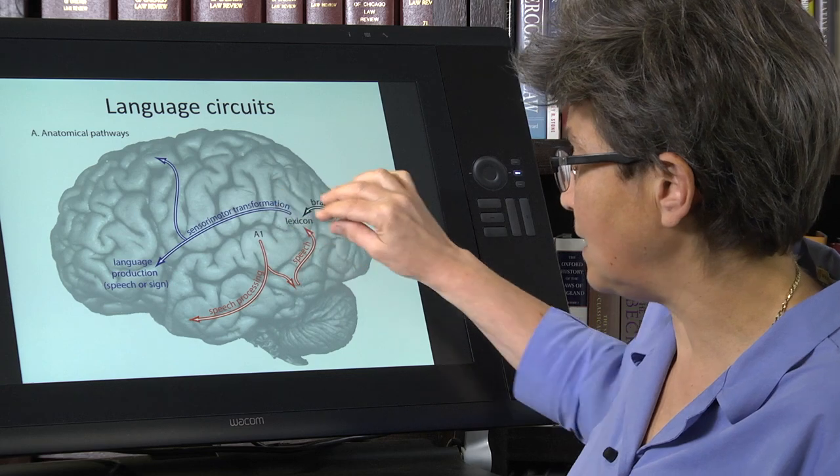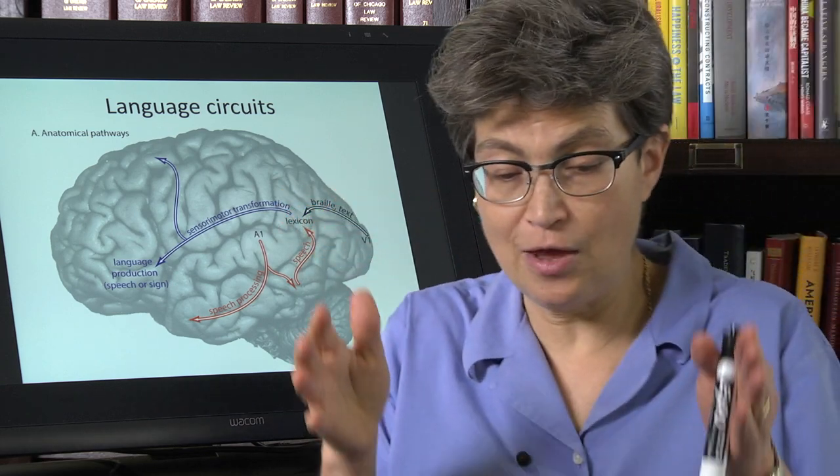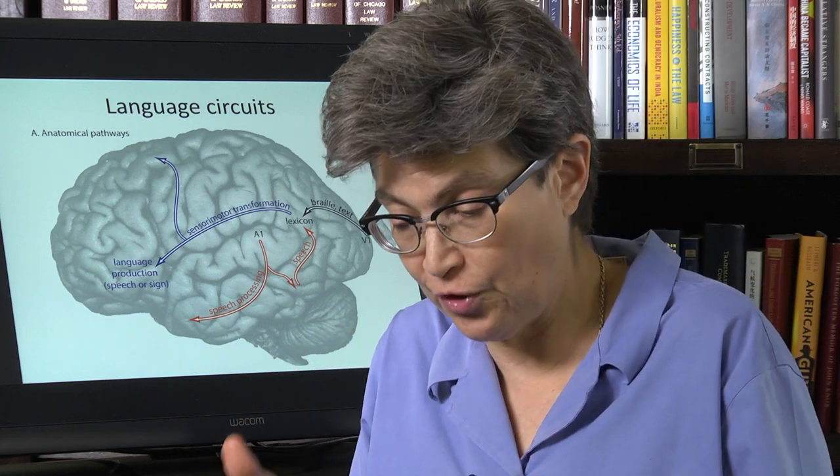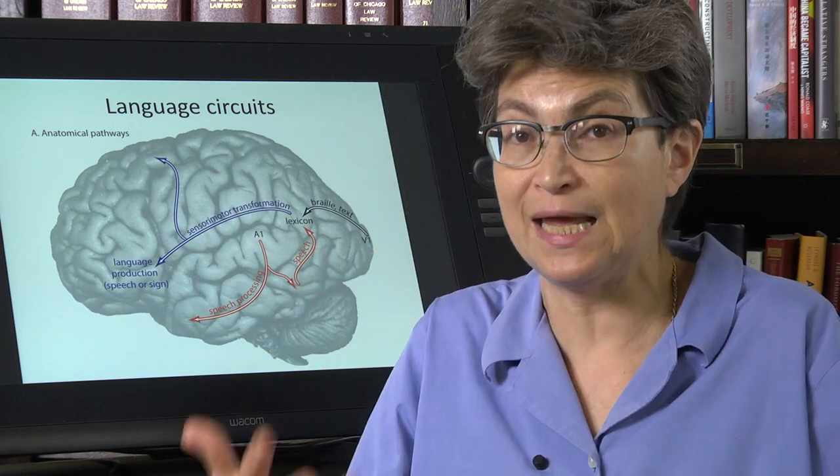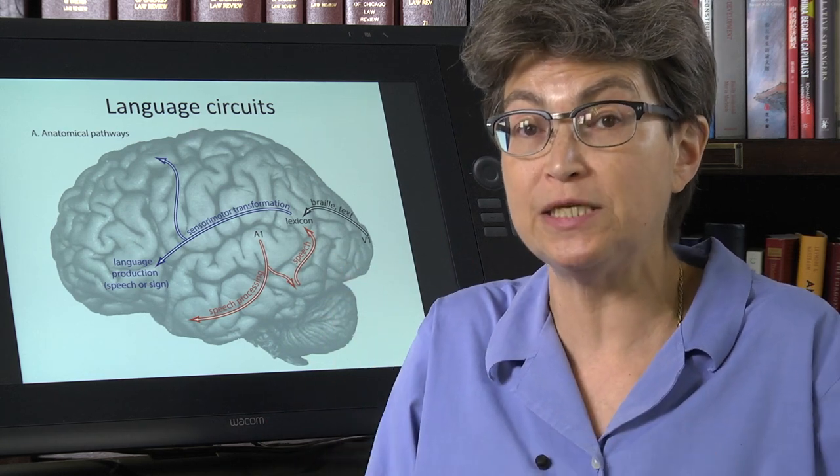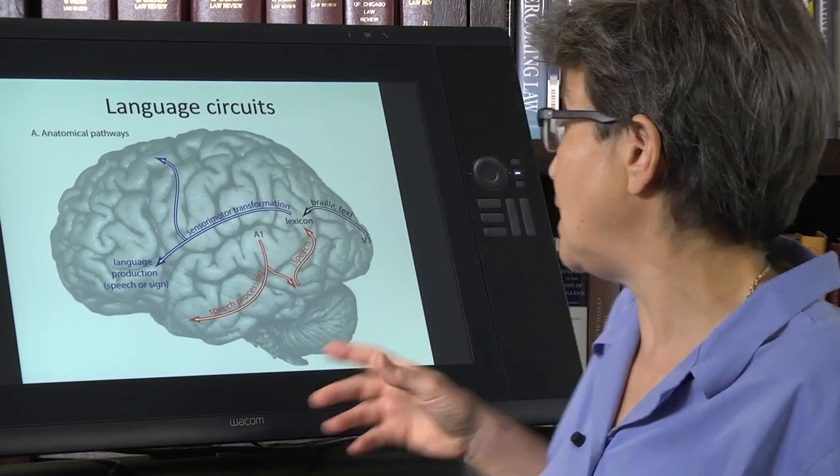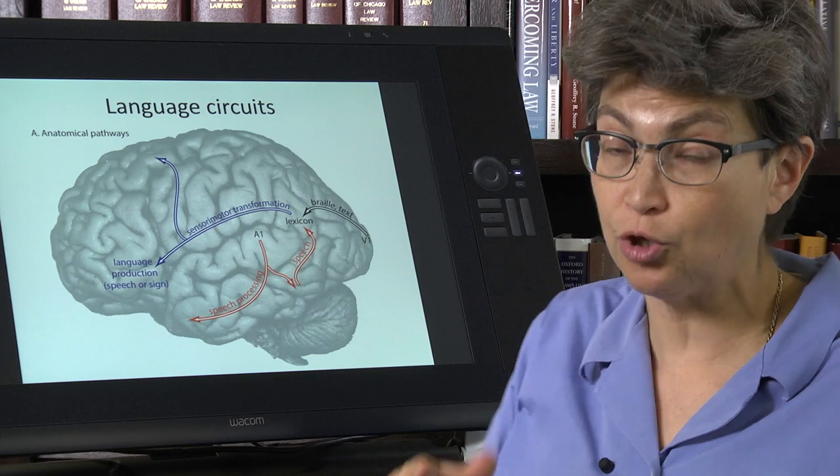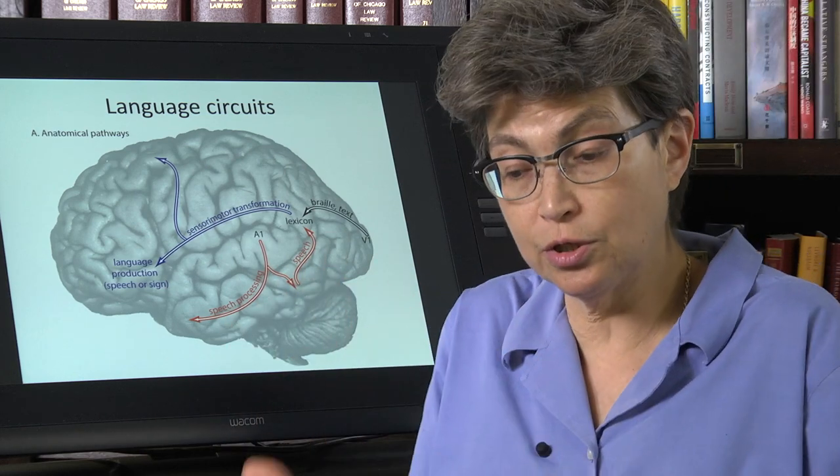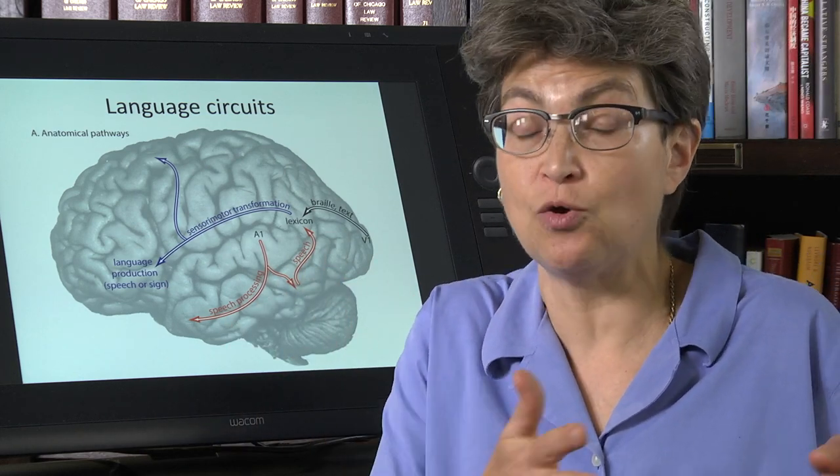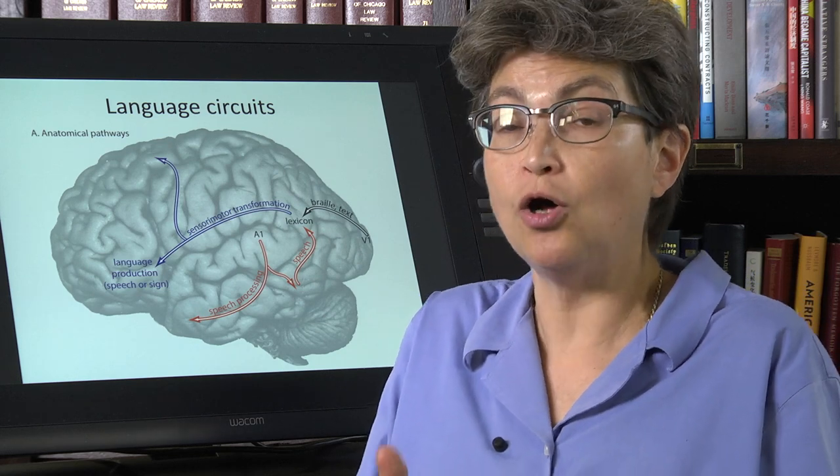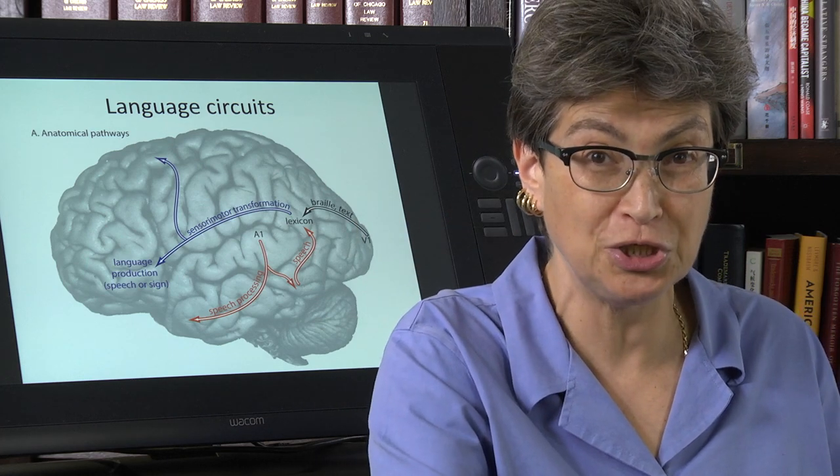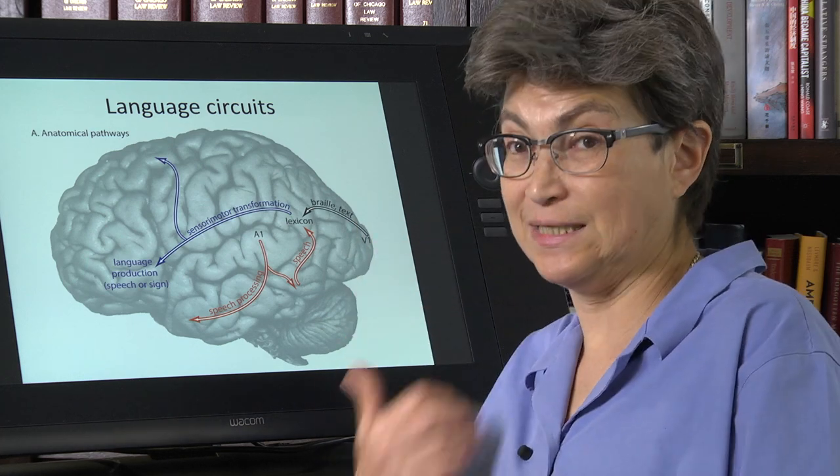So people who have a lesion here have a Wernicke's aphasia. Wernicke's aphasia means that they have a very difficult time understanding the semantics of speech, what is being said. They are going to have a hard time understanding spoken speech. They're also going to have a hard time reading. That's called alexia. So the hard time understanding speech is an aphasia. It's a Wernicke's aphasia, also known as a fluent aphasia. It's known as a fluent aphasia because they still can produce speech, but they can't understand it.